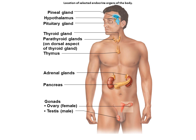Some organs have both exocrine and endocrine functions — those are the pancreas, gonads, and placenta. An exocrine gland produces non-hormonal substances such as sweat and saliva into ducts to carry secretions to membrane surfaces.